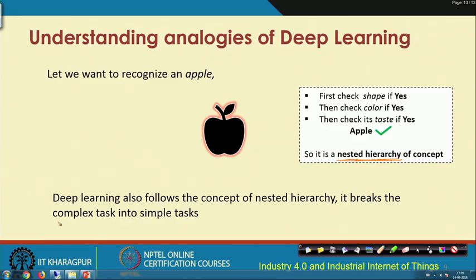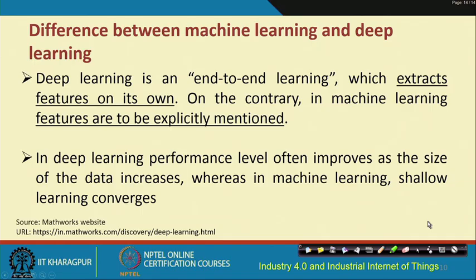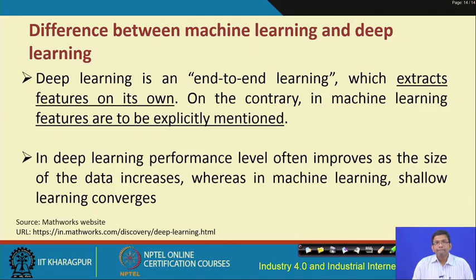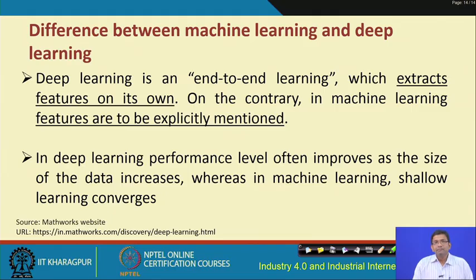Deep learning breaks complex tasks into simpler tasks. The difference between machine learning and deep learning: deep learning is an end-to-end learning which extracts features on its own — that is the key thing. In machine learning, features have to be explicitly and manually mentioned. In deep learning, performance often improves as the size of the data increases, whereas in machine learning the shallow learning basically converges.